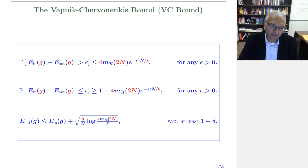Now, it's possible that m_H of 2n is 2 to the n for all n, in which case that's a bad hypothesis set, and this error bar does not drop to zero. And you cannot learn from this hypothesis set because you cannot implement the first step of learning, which is that E_in close to E_out.